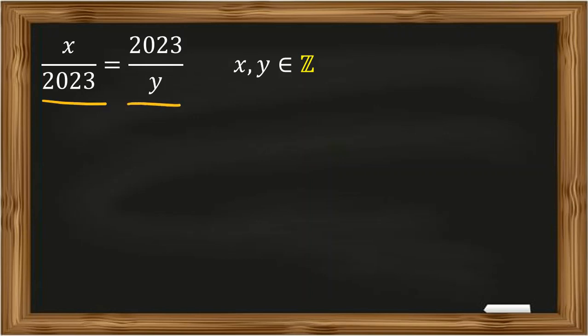x over 2023 equals 2023 over y. We want to find this. If we cross multiply, xy will be 2023 squared.